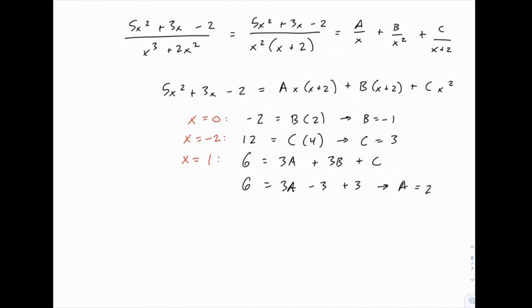Which means that our complicated-looking rational function can be written in partial fraction form, which is simpler, as A/x, so 2/x, plus B/x², so -1/x², plus C/(x + 2), where C is 3.